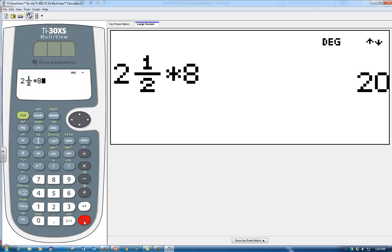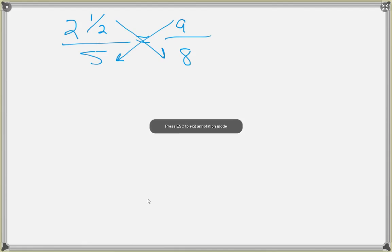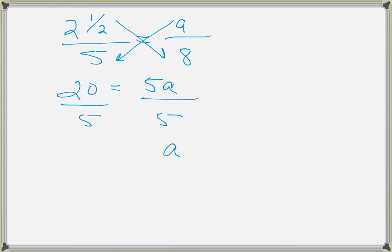So let's do 2 1/2 times 8. So we can use our calculator, which comes out to 20. So on that one side, we have a 20. 2 1/2 times 8 is 20, 5 times a is 5a, and then divide. So a is going to be 4.